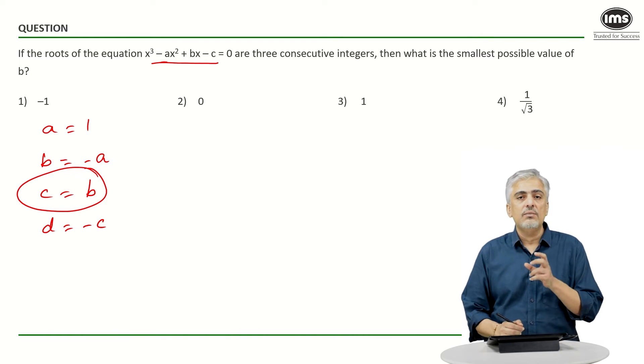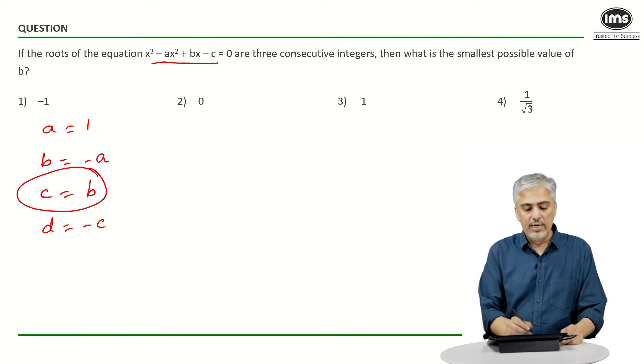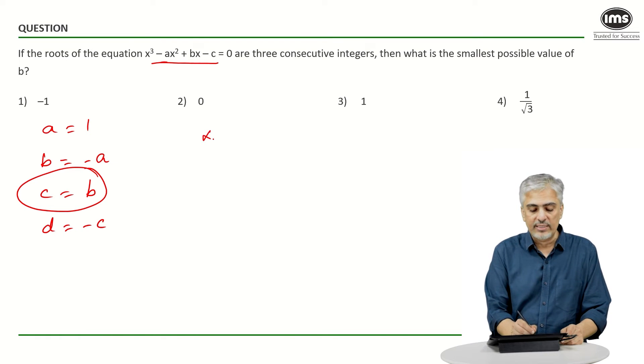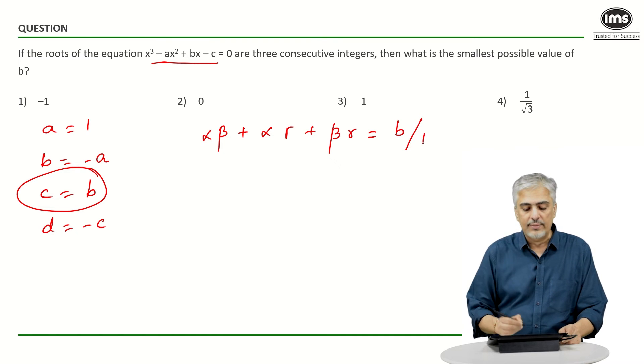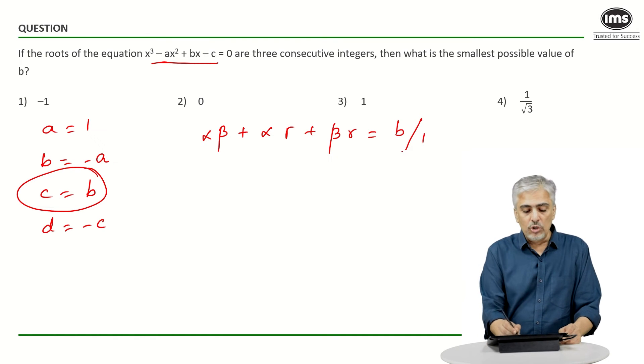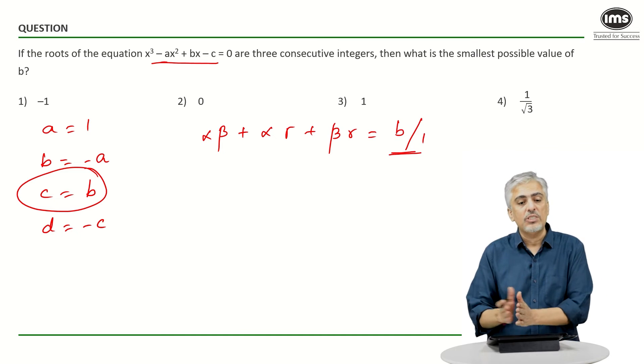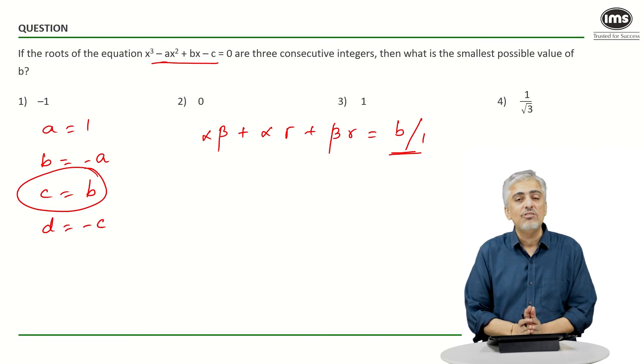What was the value of c? It comes when you take two roots at a time. So that is αβ + αγ + βγ. The property was c/a. In this case it will become b/1. Now I want to minimize the smallest possible value of b. That means I want to minimize the value of b.